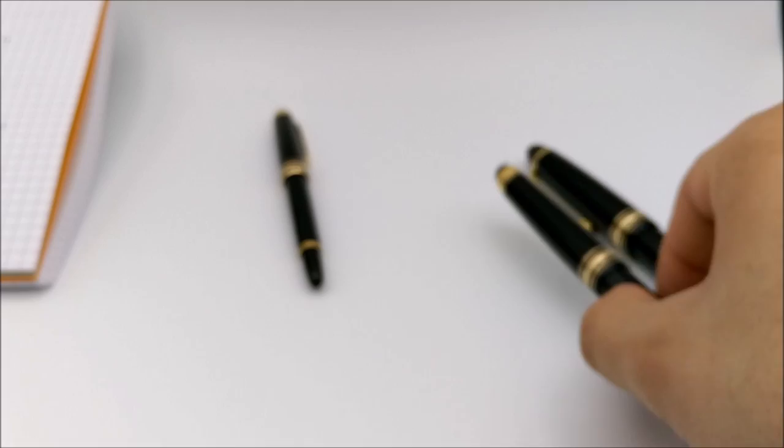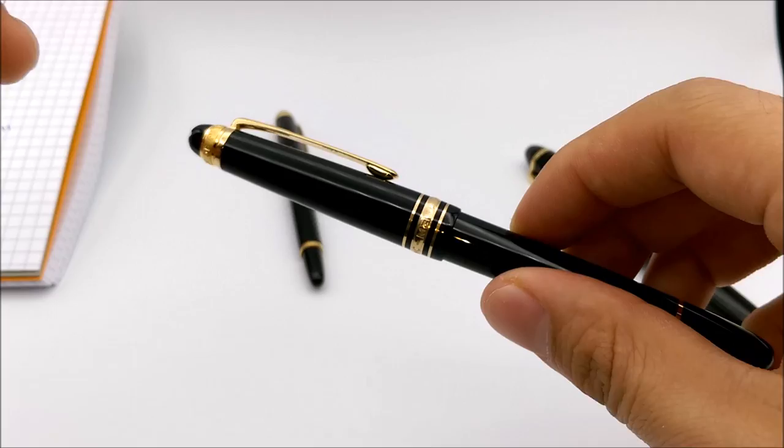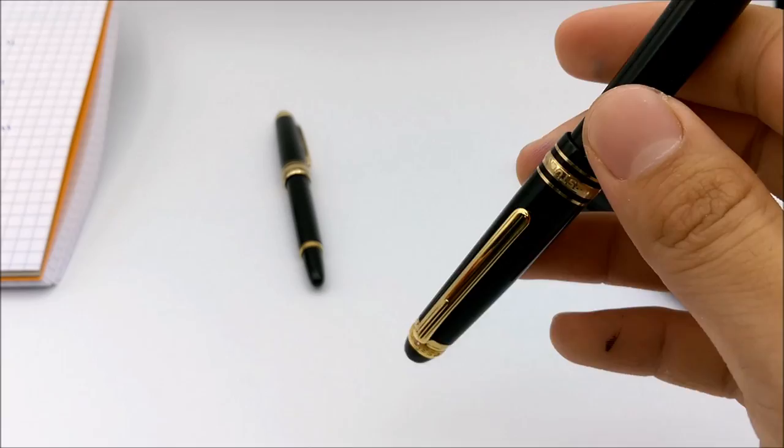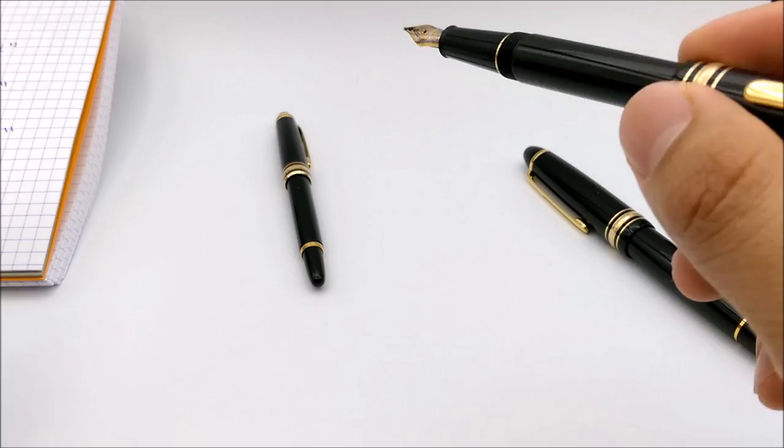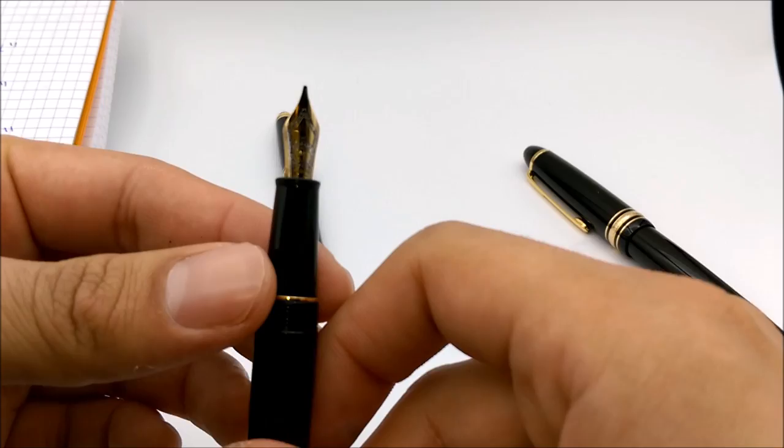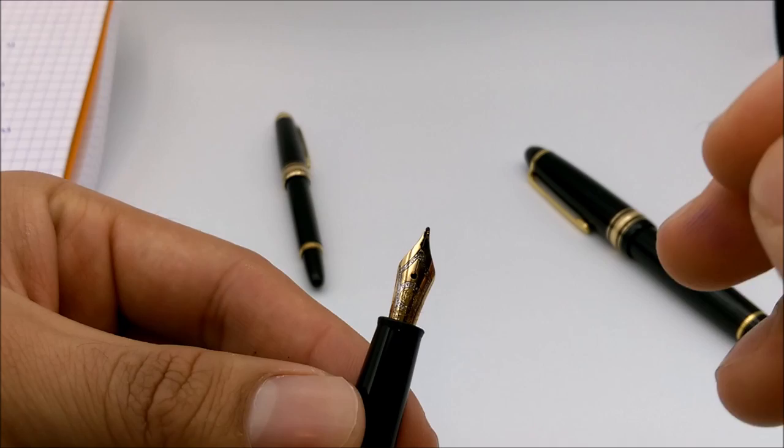Followed up we have the 145. This one is made entirely out of plastic. Montblanc calls it precious resin but we all know what that means. It's not too different from the 146. The only thing that we should take into consideration is the nib size.